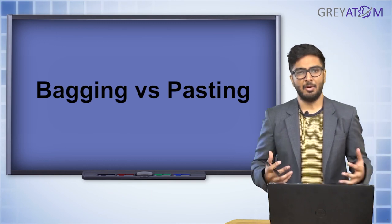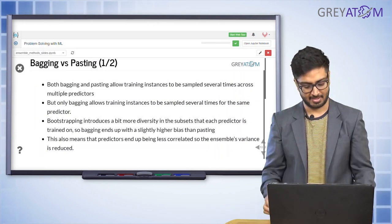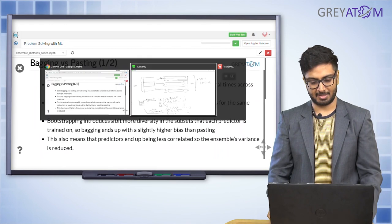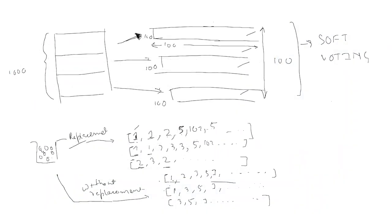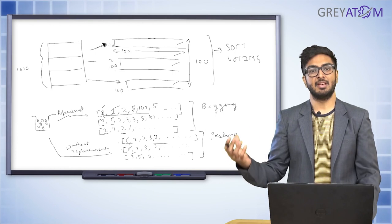Let's compare bagging versus pasting. Both bagging and pasting allow training instances — data rows — to be sampled several times across multiple predictors. Row number one could be repeated across multiple samples in both cases. However, only in bagging can a row be repeated within the same sample, because bagging samples with replacement. Pasting selects samples without replacement, so once a data point is selected it cannot appear again in that same sample.